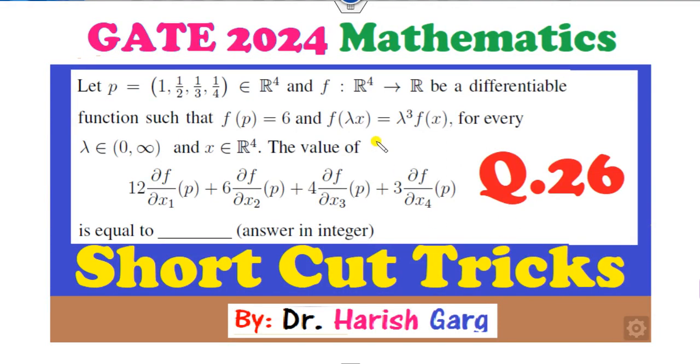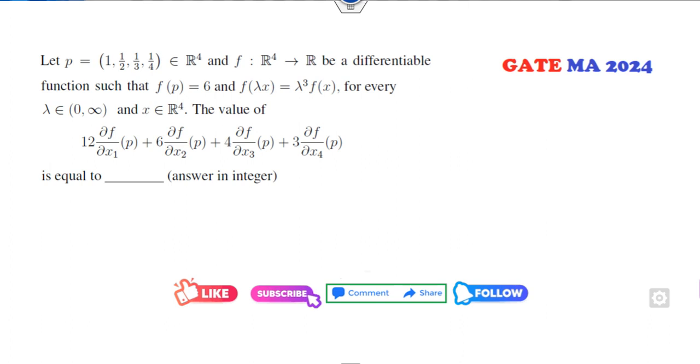Hello everyone, welcome to the next lecture on the GATE 2024 mathematics. Today I will explain how you can solve question number 26 with the help of a shortcut trick. Now if you look at the statement very carefully, what you'll note is that the first thing is it should be the partial derivative.